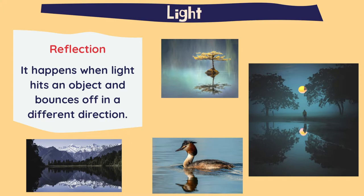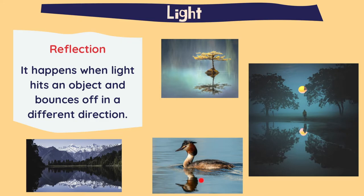Let's have a look at two characteristics of light. The first one is reflection. It happens when light hits an object and bounces off in a different direction. For example, let's have a look at this duck. The light comes to the duck and it bounces off, going in another direction.